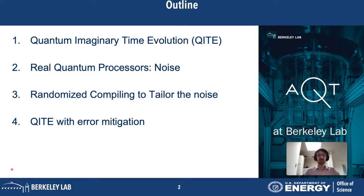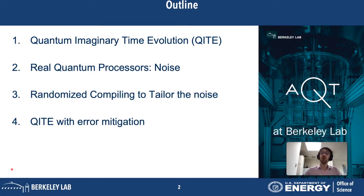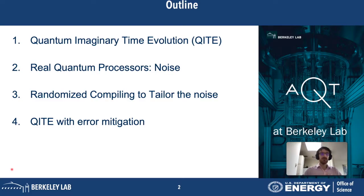This talk is organized as follows. First, I will talk about the Advanced Quantum Testbed, our quantum processor, and present the KITE or quantum imaginary time evolution algorithm. I will then show what happens when we try to run this algorithm — we get noise and we have to deal with it. I will show a technique called randomized compiling that can tailor the noise into something easier to handle, and finally show the results for KITE using this error mitigating technique.